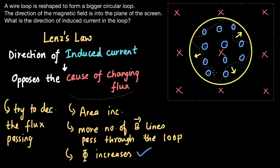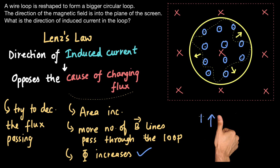Now that this coil is producing a magnetic field coming outside the plane of the screen, we can figure out the direction of the induced current using the right-hand curl rule. The direction of the field is in the direction of the thumb, which is upward. The curl of the fingers gives the direction of the current, and in this case the curl of the fingers is in an anti-clockwise direction. So the current induced in the coil will be in an anti-clockwise direction.